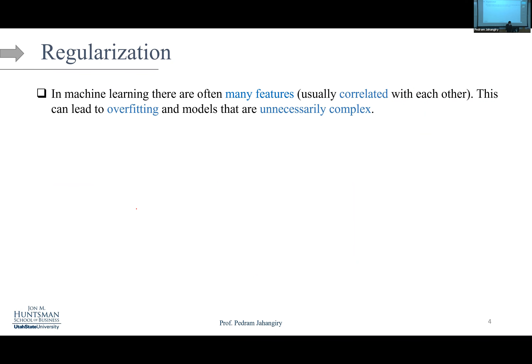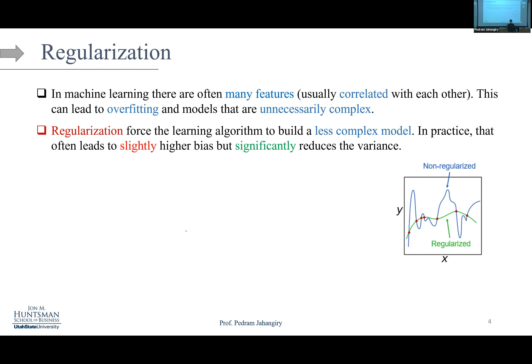In machine learning there are often hundreds or thousands of features. If you have 100 explanatory variables, there's a good chance they're highly correlated. In finance, for example, factor returns are highly correlated with each other. When features are highly correlated, there's a good chance the model will overfit and become unnecessarily complex. Regularization forces the learning algorithm to build a less complex model, hoping that bias increases a little but variance decreases a lot.